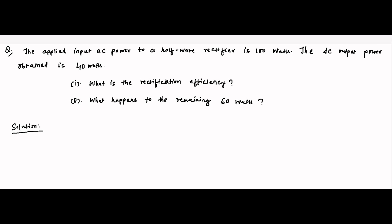This is the first question we are going to solve. The question is: the applied input AC power to a half wave rectifier is 100 watts and the DC output power obtained is 40 watts. What is the rectification efficiency and what happens to the remaining 60 watts?